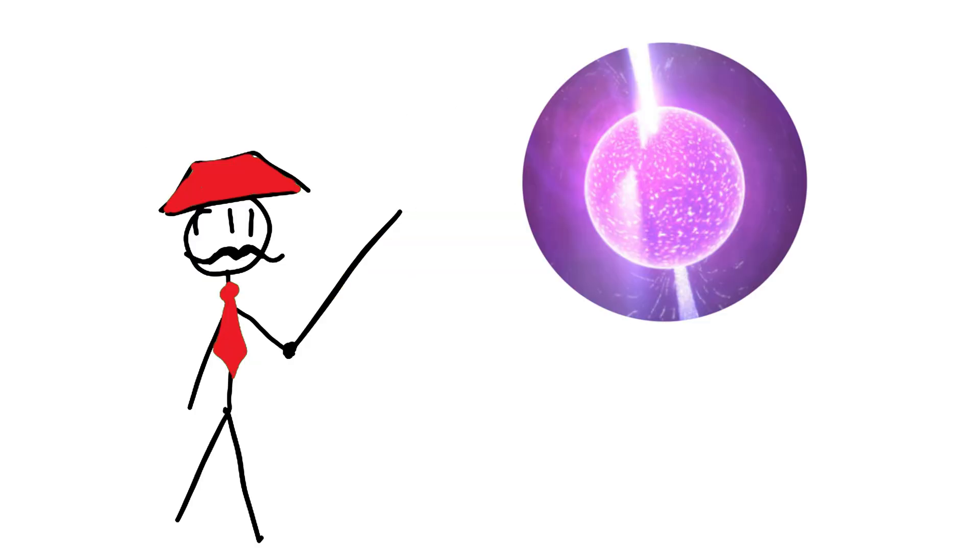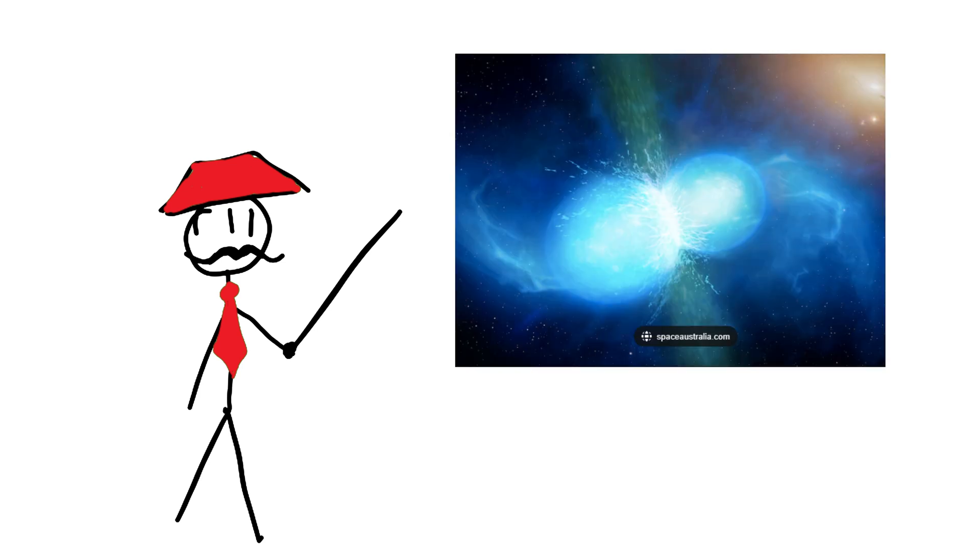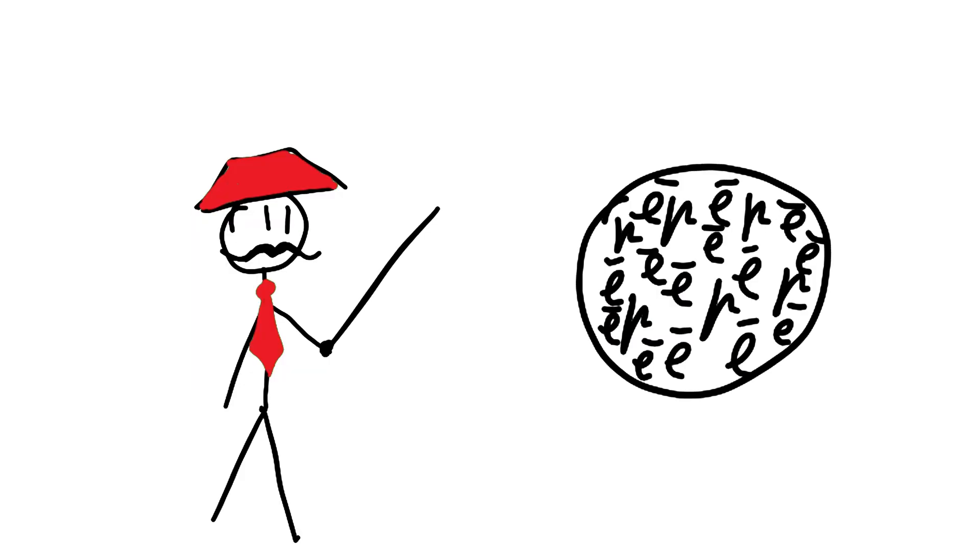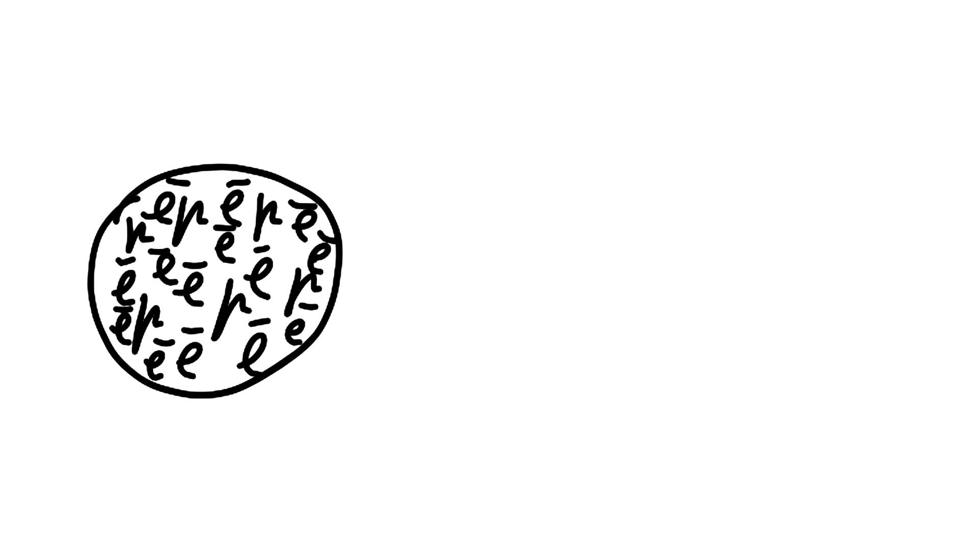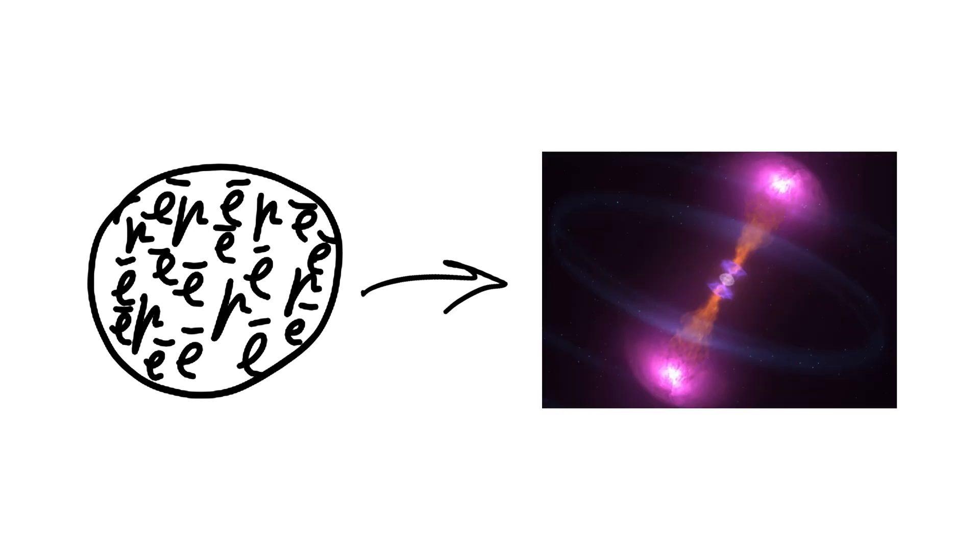Neutron stars are very small, dense stars. They form when a massive star explodes in a supernova. During this explosion, the star's core collapses under its own gravity, squeezing protons and electrons together to form neutrons. This creates an incredibly dense ball of neutrons, hence the name neutron star.